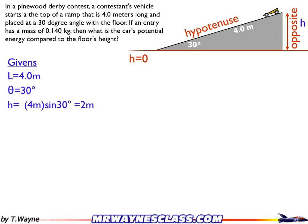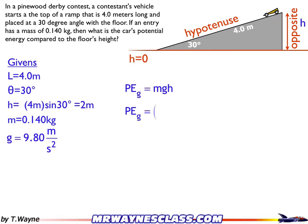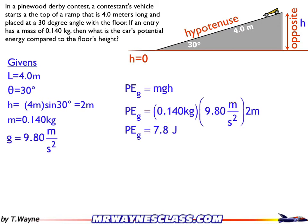Now the mass — they give me that to be 0.140 kilograms — and of course gravity is 9.80 meters per second squared on the surface of the Earth. To solve this, the gravitational potential energy formula is MGH. So the gravitational potential energy is 0.140 kilograms times 9.8 meters per second squared times 2 meters. When I do the math, I get 7.8 joules. So compared to the bottom, the car has 7.8 joules when it's ready to start.